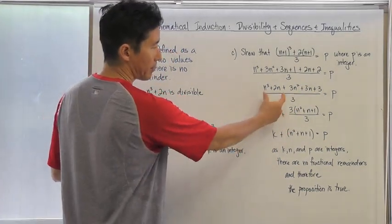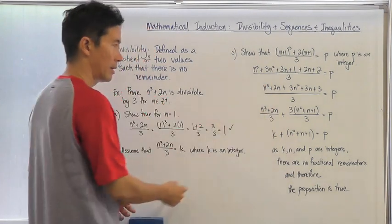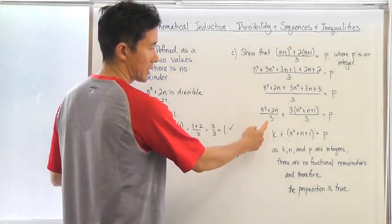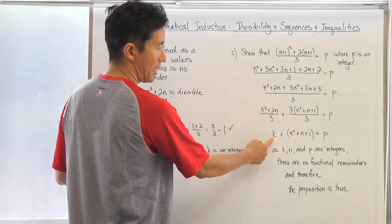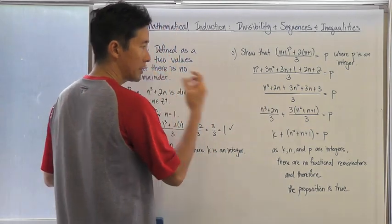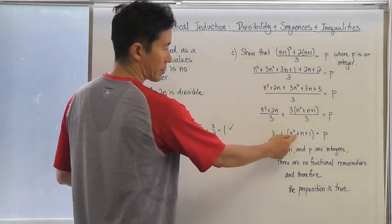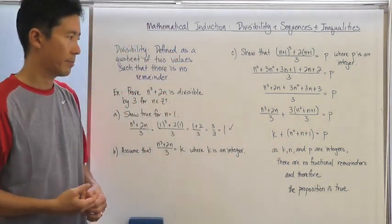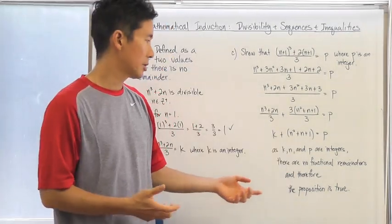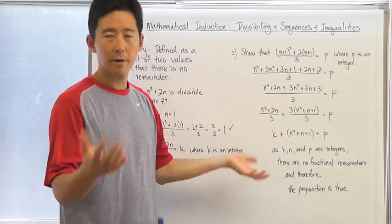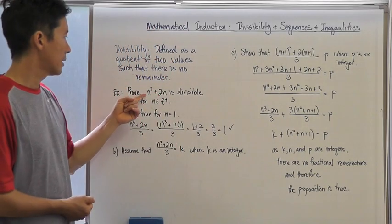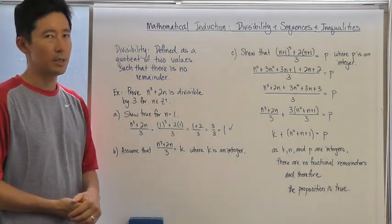I separate it into two parts. This part is the assumption from step B of the mathematical induction process, which equals k. The remaining terms — 3n squared plus 3n plus 3 — have a common factor of 3. Canceling the 3s gives n squared plus n plus 1, so k plus n squared plus n plus 1 equals p. Since k, n, and p are all integers with no fractional remainders, the proposition that n cubed plus 2n is divisible by 3 is true.